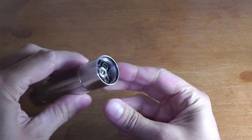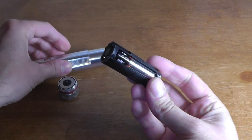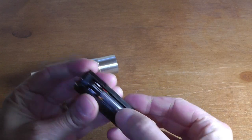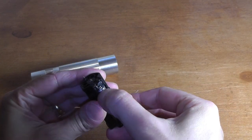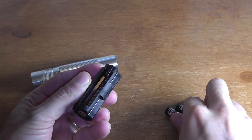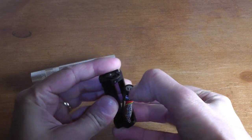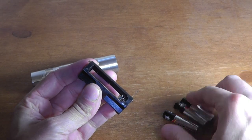So first you unscrew the back of the flashlight and then here you take out this battery package. And that contains the three batteries in it. I'm taking those out and going to replace those with fresh batteries.